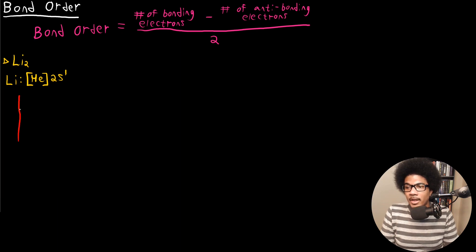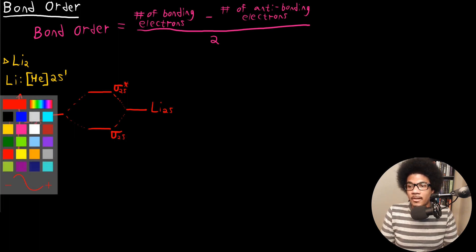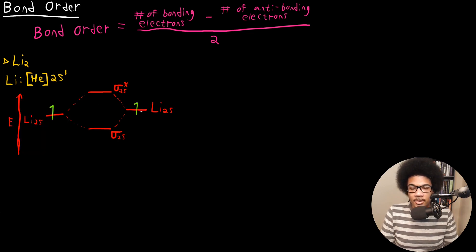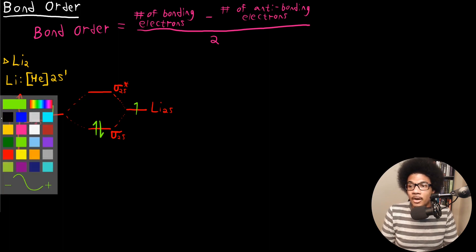Let's draw the MO diagram for Li2. On the left and right-hand side, I'm going to have the lithium 2s orbitals. These are going to form two molecular orbitals, just like the 1s orbitals did — a sigma star 2s and a sigma 2s. Let's fill in our electrons: we have one electron from each lithium atom, giving us two electrons total. These two electrons are going to come together and pair in the sigma 2s orbital. So we have an MO diagram that looks very similar to H2; the only difference is the parent atomic orbital.